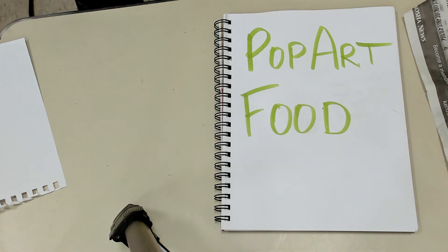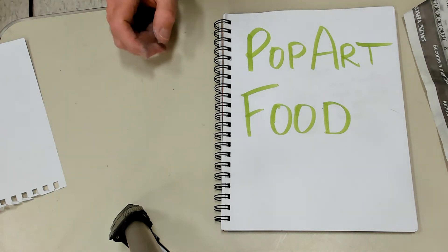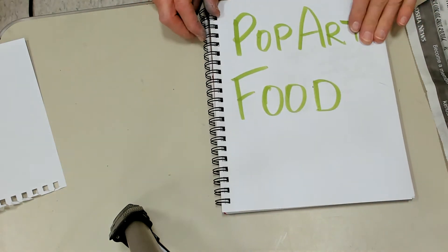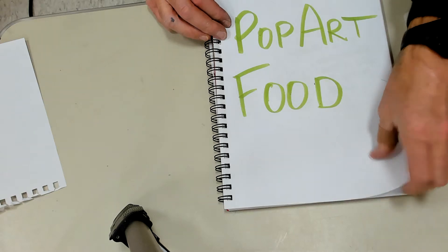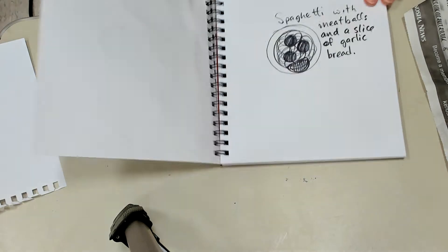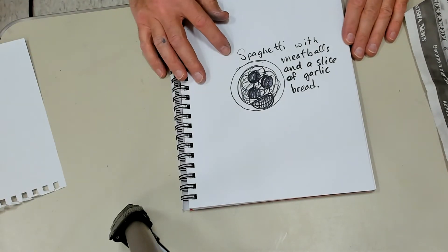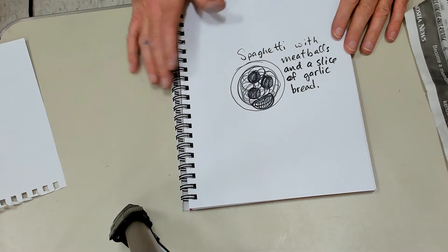Today we're going to make food out of clay. I call this assignment Pop Art Food. We just looked at Claus Oldenburg and Wayne Thiebaud, and now we're going to try to make our own food out of clay. The first thing you have to do is draw what you plan on making. I came up with a plan - I want to make spaghetti with meatballs and a slice of garlic bread.